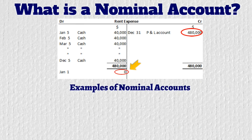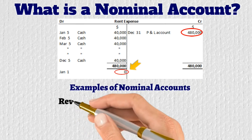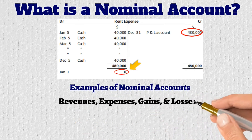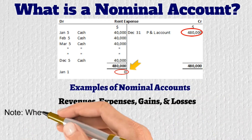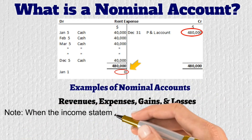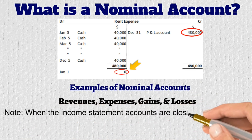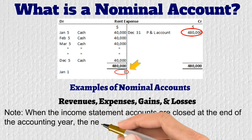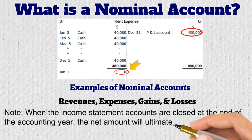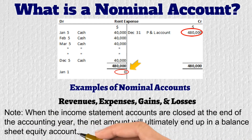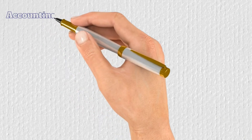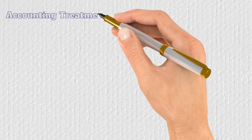Examples of nominal accounts are the income statement accounts, such as the accounts for recording revenues, expenses, gains, and losses. Note that when the income statement accounts are closed at the end of the accounting year, the net amount will ultimately end up in a balance sheet equity account.